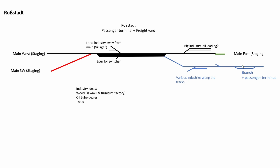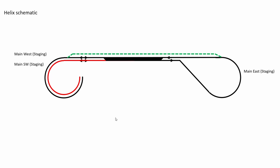We also wanted a branch line connected on the east side. Just to indicate, there are various industries along the branch line, and on the right there should be a runaround at the end of the branch. If there's space we can add some industry on the main line and maybe some more industries in Rostadt itself. When I sent this to the client his first reaction was 'wow that looks amazing, but is that all going to fit in the space?' Well, I do have a few tricks up my sleeve.